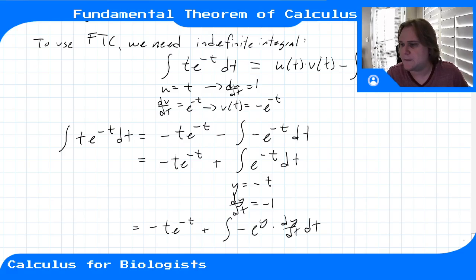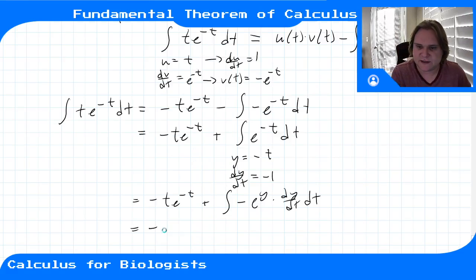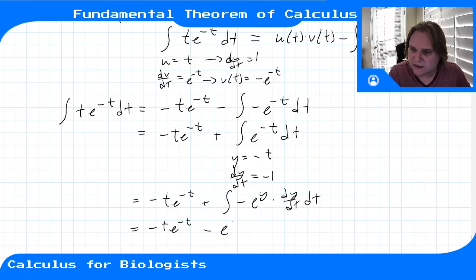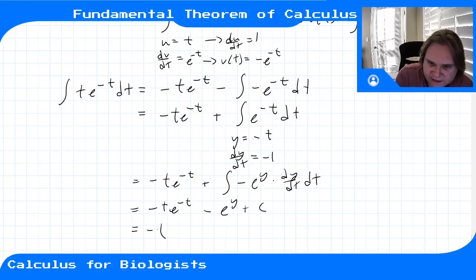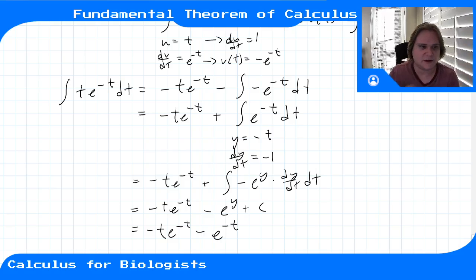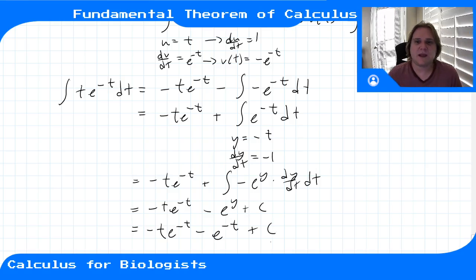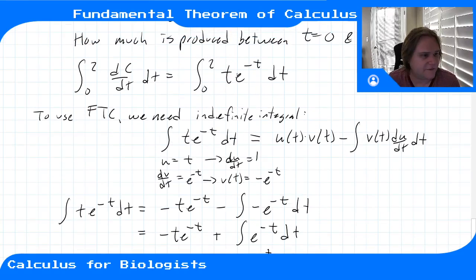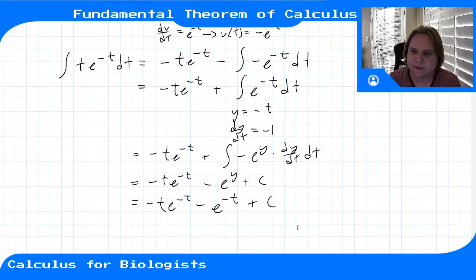The full antiderivative of t e^(−t) works out to −t e^(−t) − e^(−t) + C, found by integration by parts.